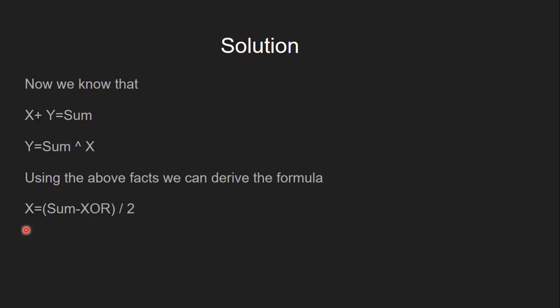Using these two formulas we can derive a new formula such that X equals (sum of X and Y minus XOR of X and Y) divided by 2. We'll be using this formula to find the value of X and Y for the given sum and XOR value.